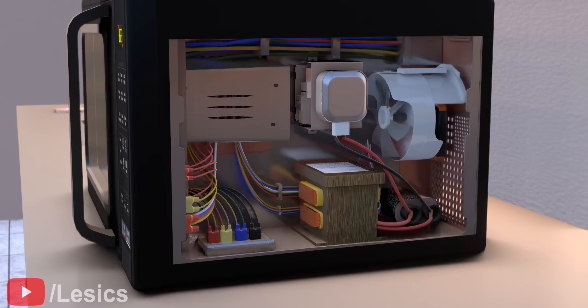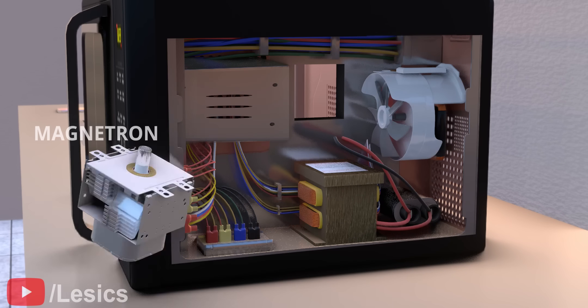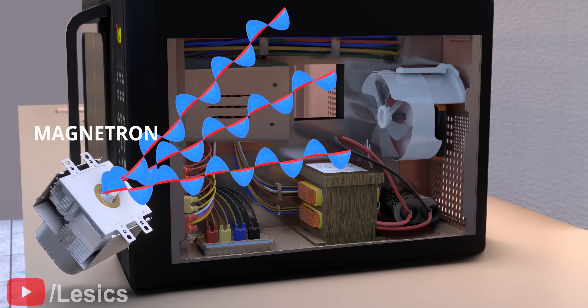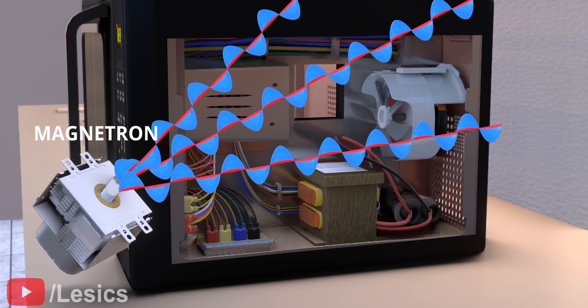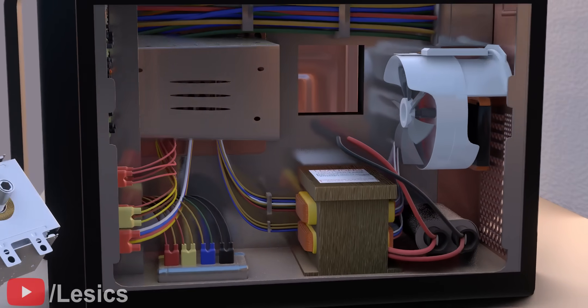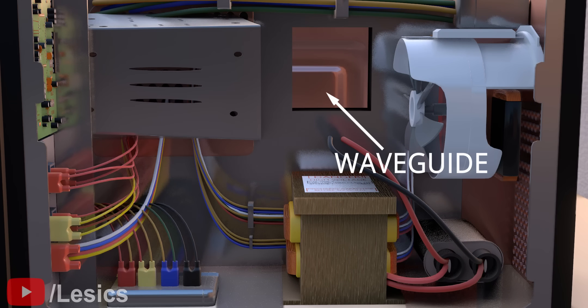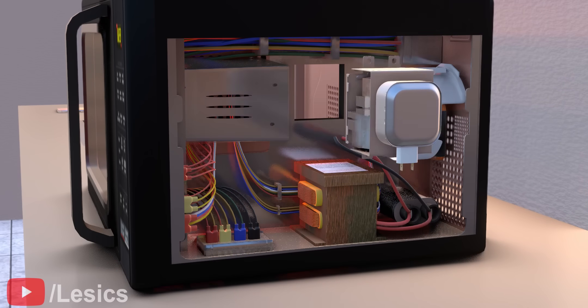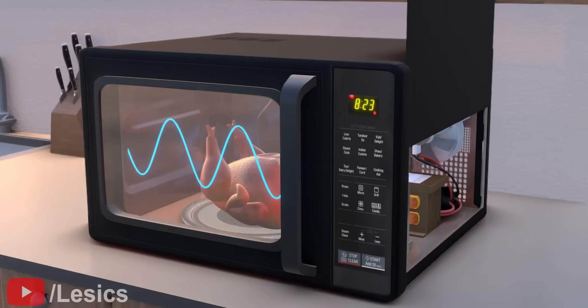The component responsible for producing microwaves is known as a magnetron. A magnetron emits microwaves in all directions. To confine the wave to propagate in one dimension, the magnetron is attached to the wave guide. From the wave guide, the waves come into the cooking chamber to heat food.